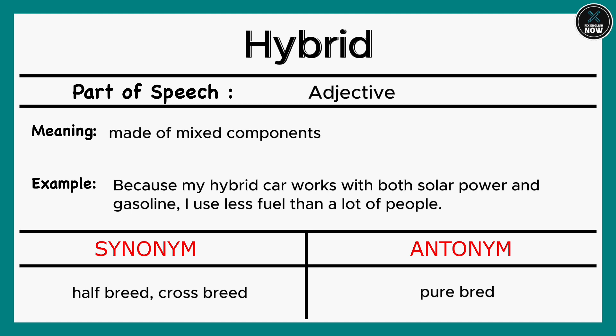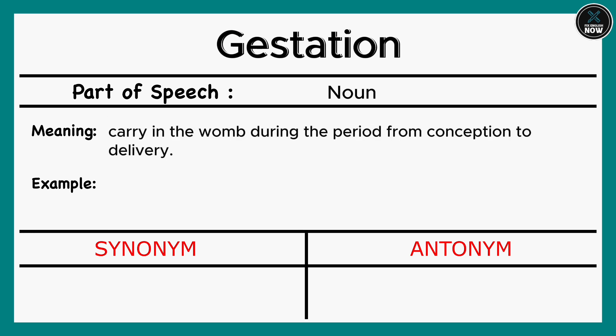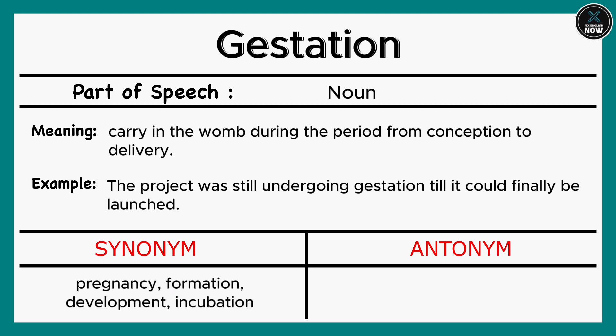Gestation: Carry in the womb during the period from conception to delivery. Example: The project was still undergoing gestation till it could finally be launched. Synonyms: Pregnancy, Formation, Development, Incubation. Antonyms: Reversion, Decrease, Barrenness.